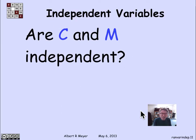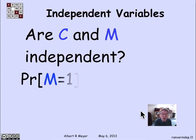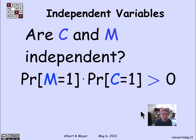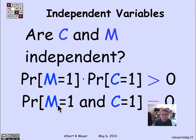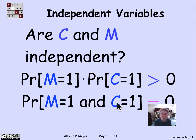Let's practice. The variable c — the count of heads when you flip three coins — and m — the 0,1-valued random variable for whether there's a match — are they independent? Certainly not. There's a positive probability that the count will be 1, and a positive probability that they all match (probability 1/4), so their product is positive. But the probability that you match and have exactly one head is 0, because if you have exactly one head you must have two tails and there's no match. So the product is not equal to the probability of the conjunction, and therefore they're not independent.